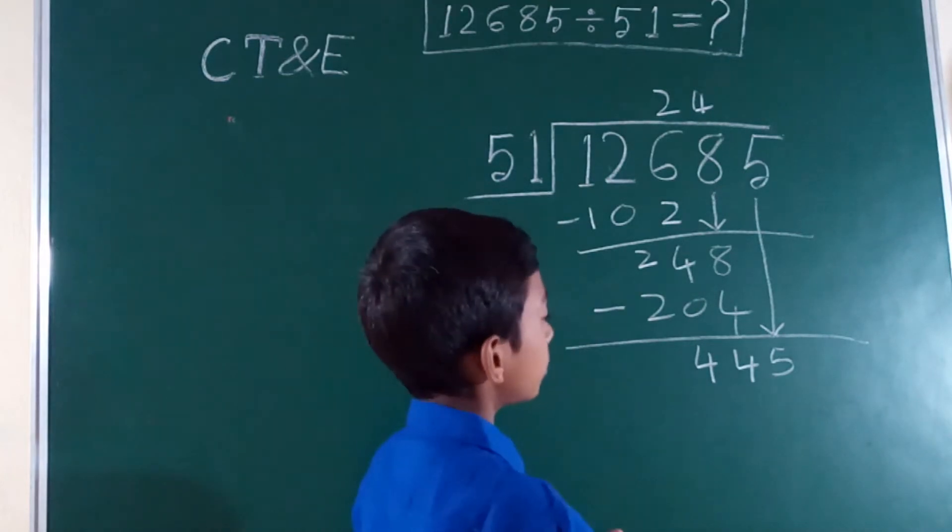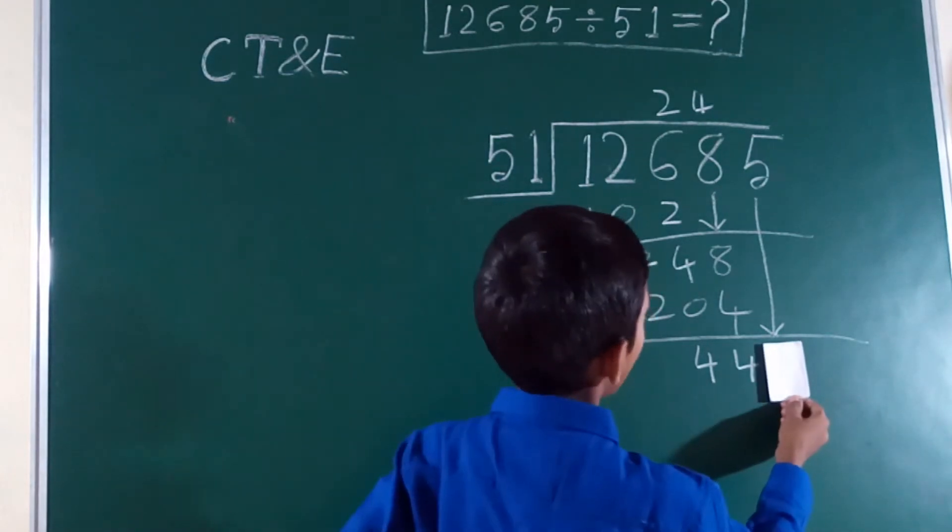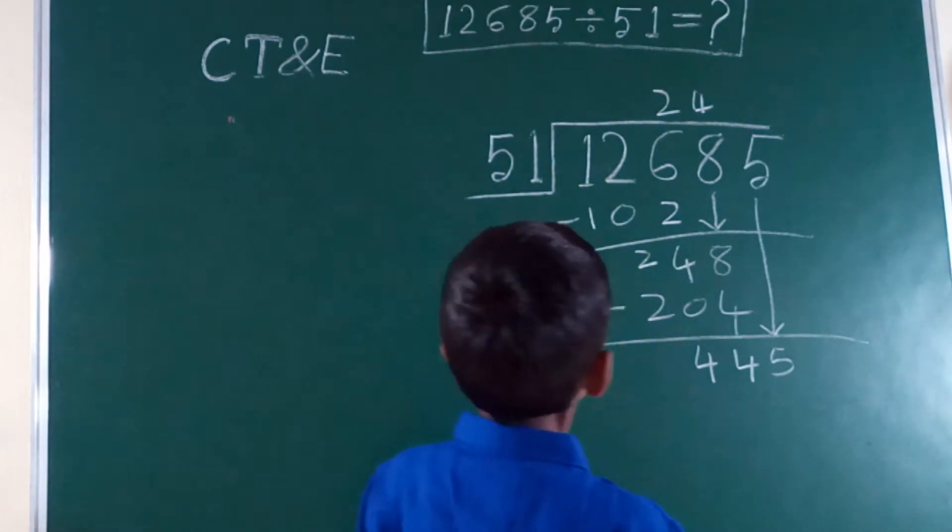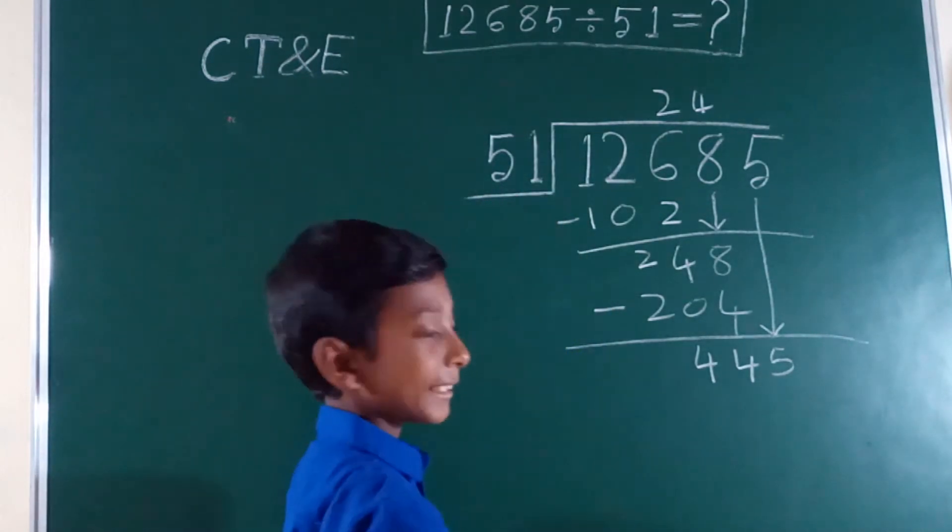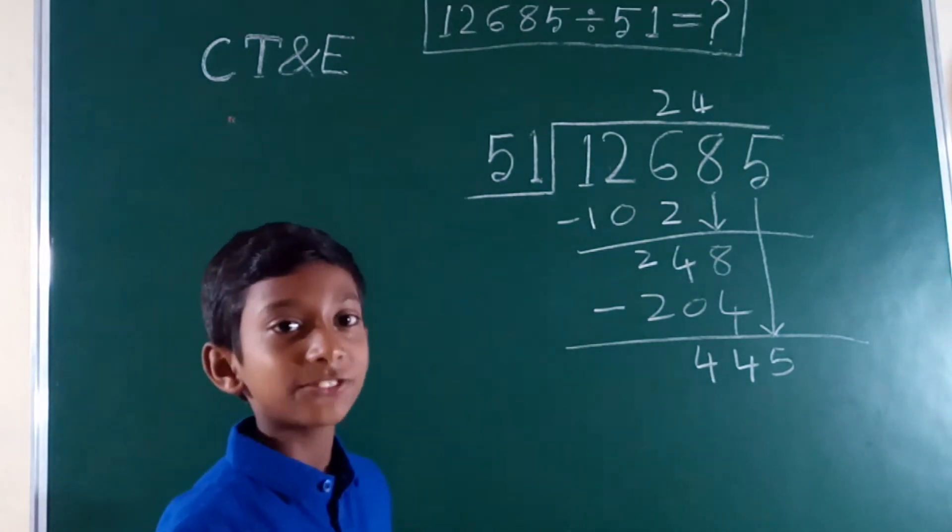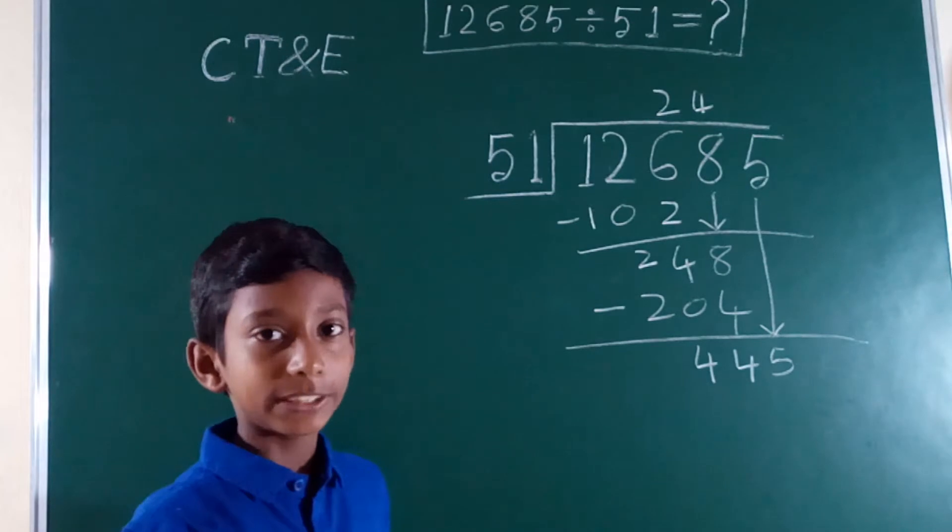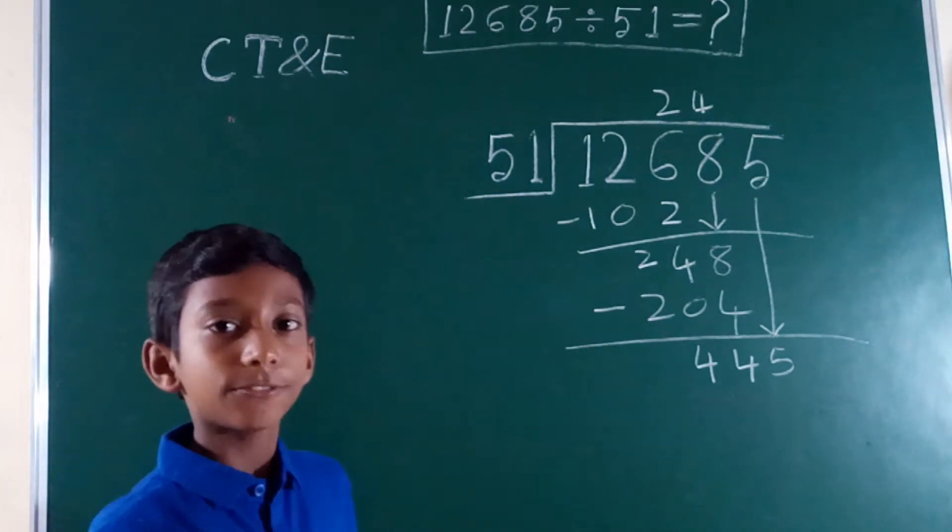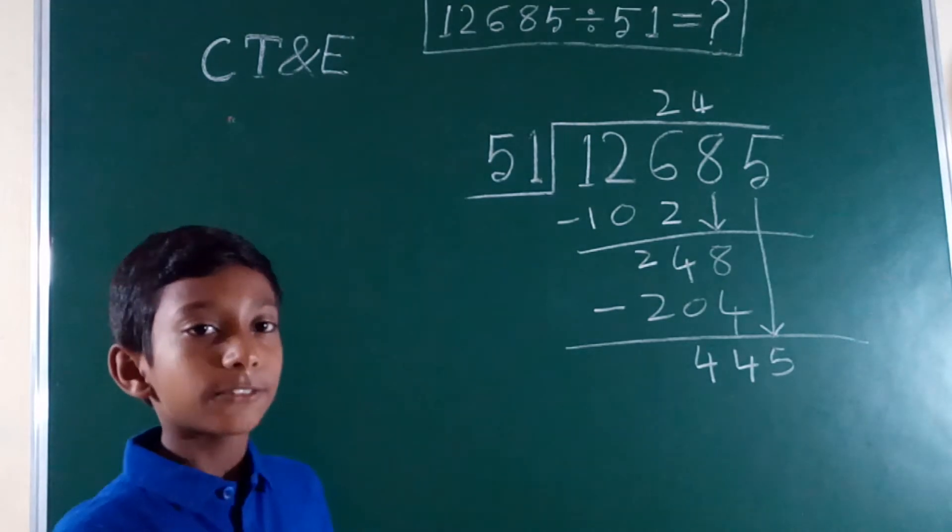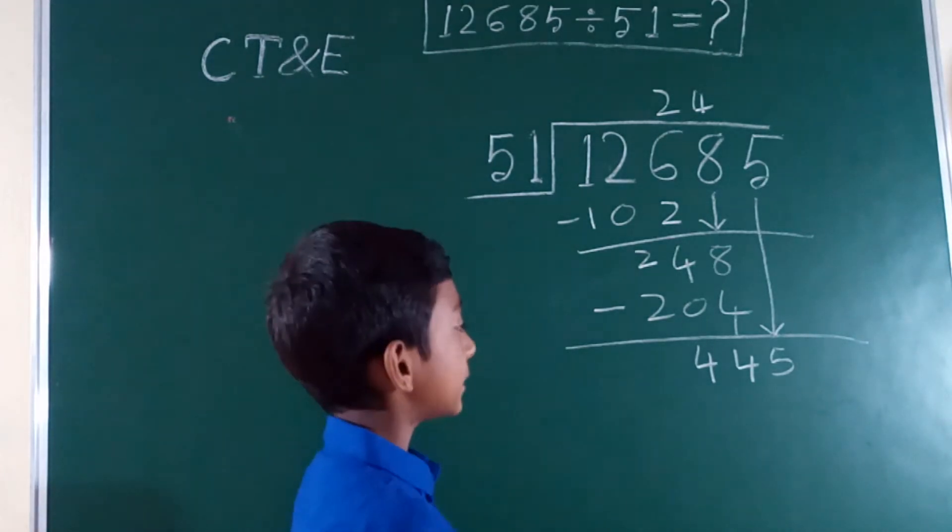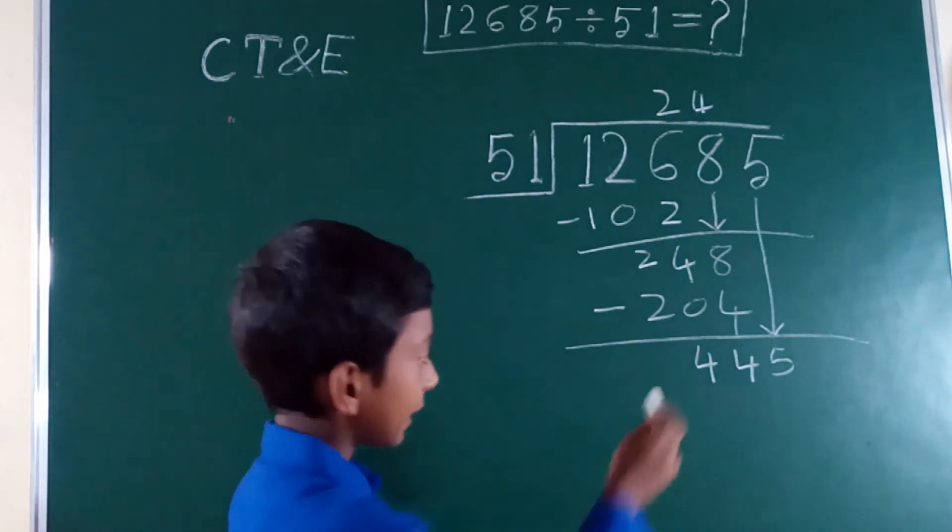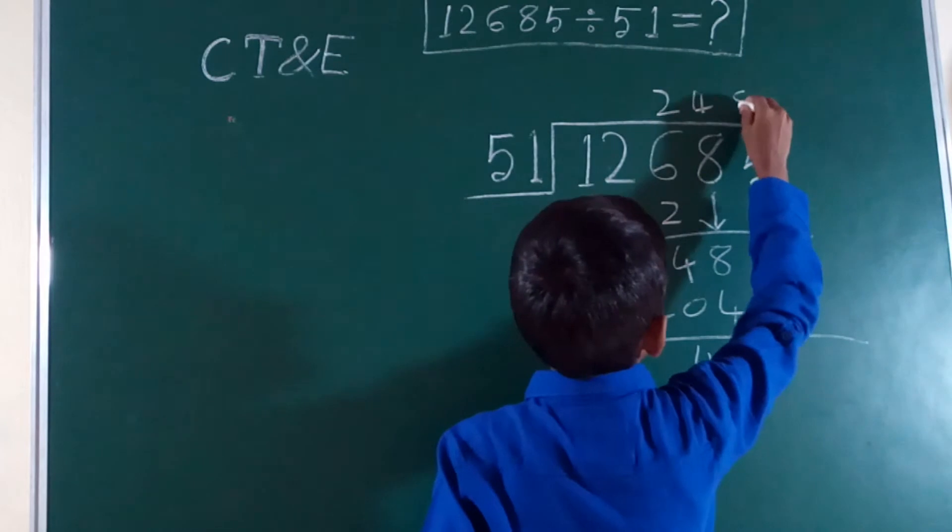5 times 1 is 5, 5 times 2 is 10, 5 times 3 is 15, 5 times 4 is 20, 5 times 5 is 25, 5 times 6 is 30, 5 times 7 is 35, 5 times 8 is 40, 5 times 9 is 45. Since 5 times 9 is 45 is bigger than 44 and 5 times 8 is 40 is smaller than 44, we are going to write 8.